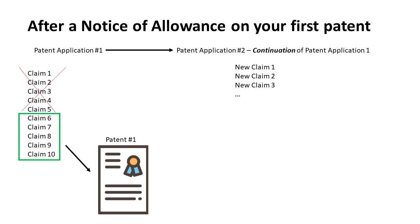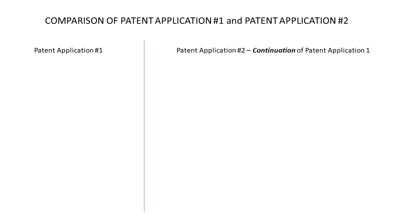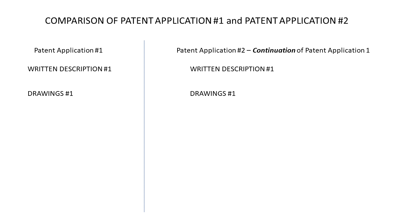Now here is where the continuation comes in. Before patent number one issues, a continuation patent application is filed with some new claims. Let's take a look at what's different between the original — sometimes called the parent application — and the new continuation application. They both use the same written description section, and they both use the same set of drawings from the first application.